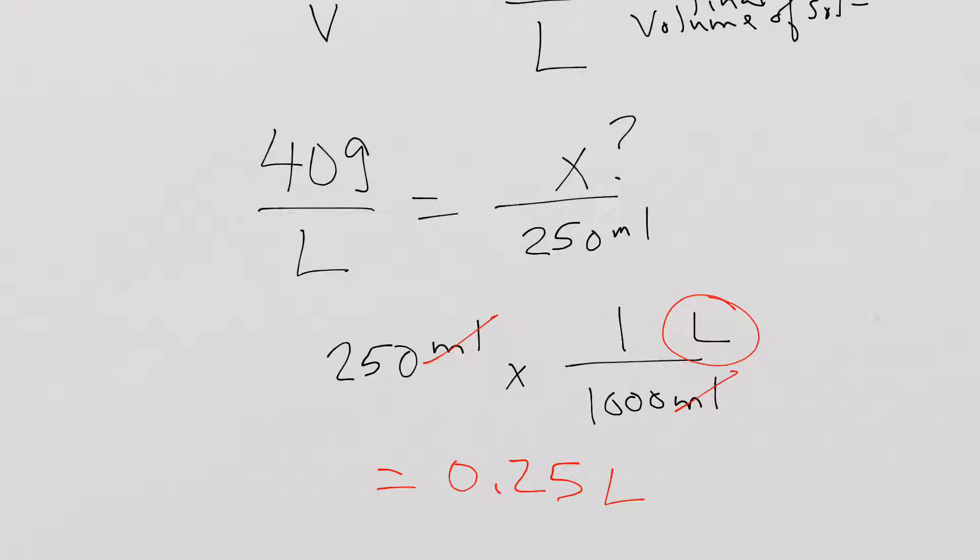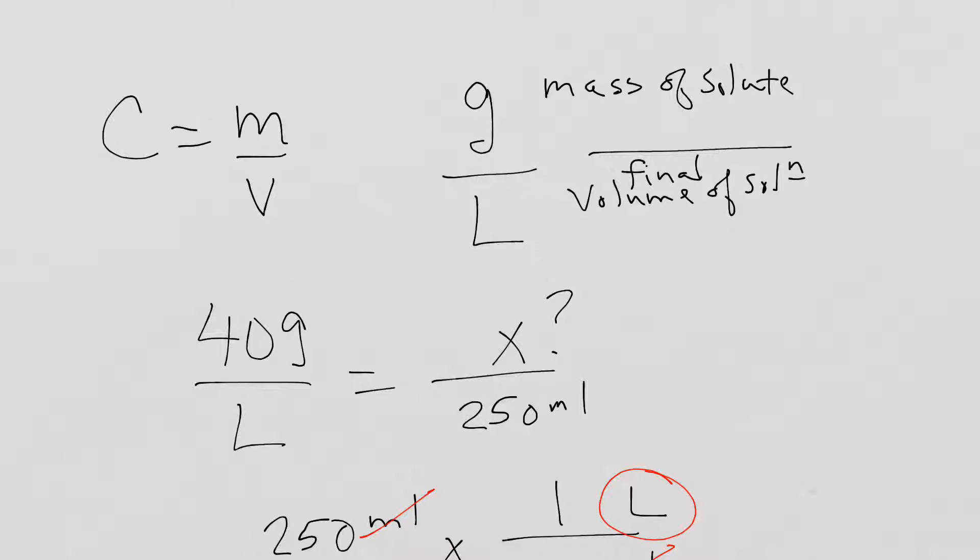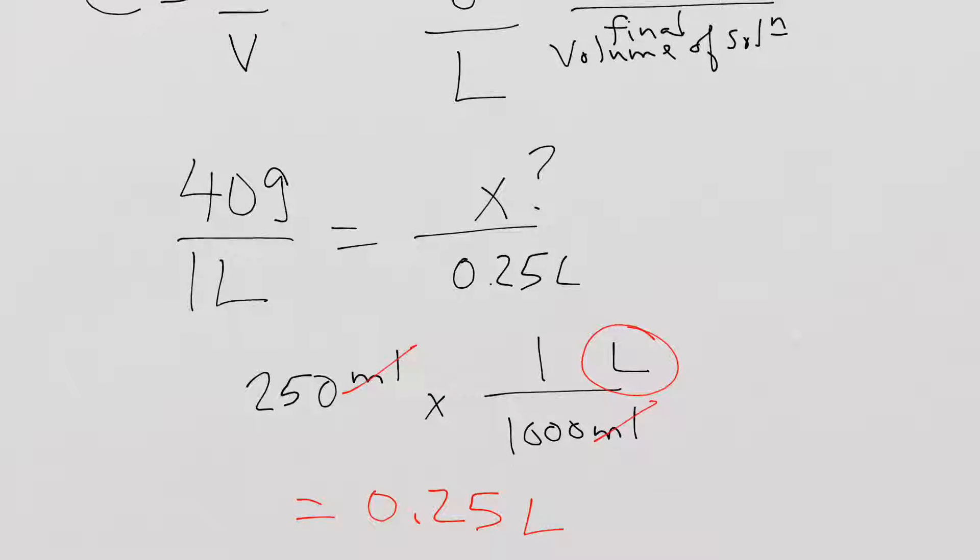And if I go and I put that back in up here, I know that this is one liter, I can figure this out through cross-multiplication. I can multiply this by this, this by this, and I will solve for my unknown amount of solute. And the same thing can be done if I'm given 2.5 liters instead of 0.25.